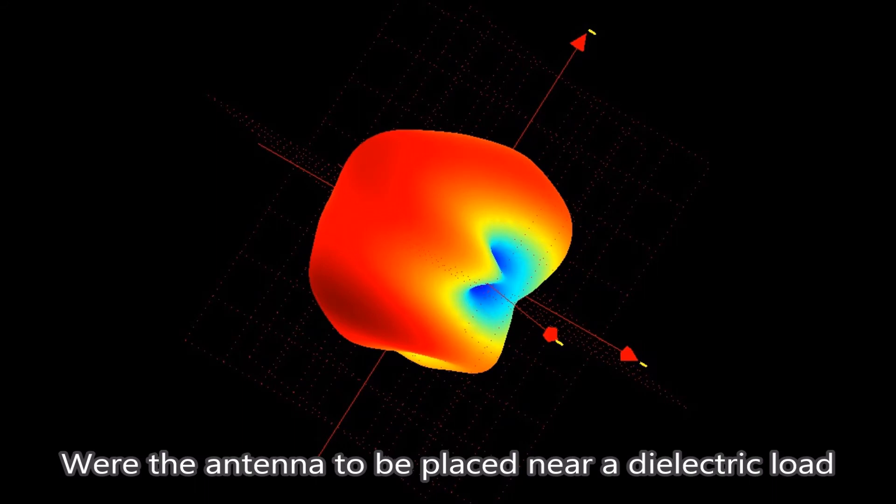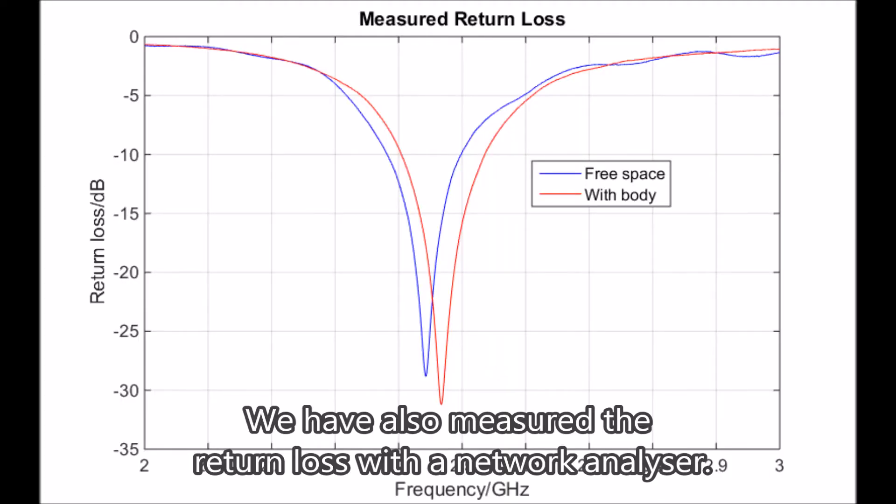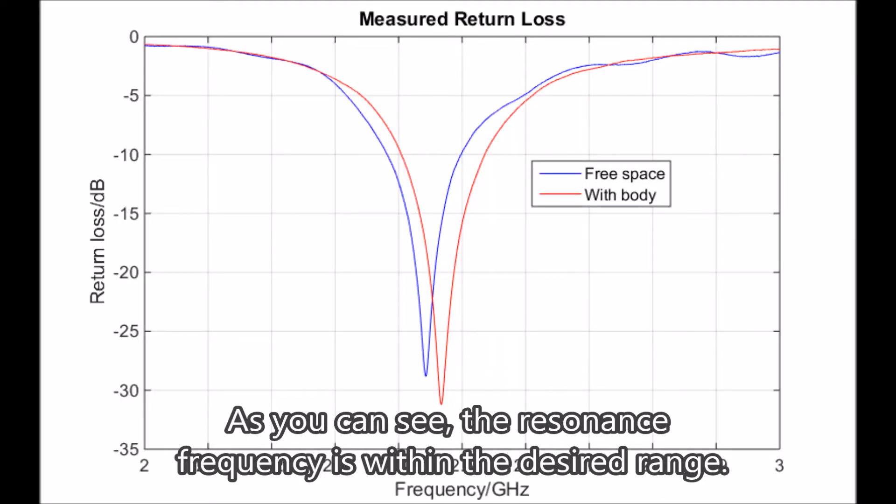With the antenna to be placed near a dielectric load, the spherical pattern would be reduced to a hemisphere and surface waves would be produced. We have also measured the return loss with a network analyzer. As you can see, the resonance frequency is within the desired range.